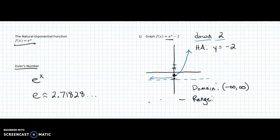And then range is always from the bottom to top, all the way down, all the way up. Well, the lowest this graph gets is negative 2, but it doesn't touch negative 2. And then the highest it gets is to infinity. It goes up forever. And so our range is from negative 2 to infinity.